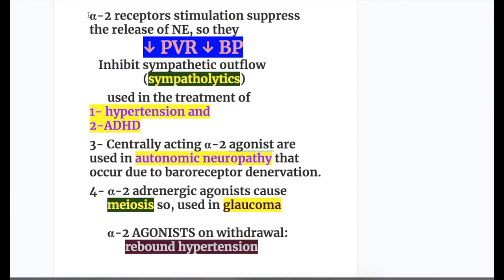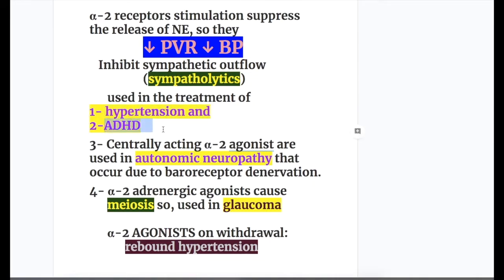Alpha-2 receptor stimulation decreases blood pressure, lipolysis, and insulin secretion. Alpha-2 receptor stimulation suppresses the release of noradrenaline, thereby decreasing peripheral resistance and blood pressure. They are used in the treatment of hypertension and also in ADHD — attention deficit hyperactivity disorder. Centrally acting alpha-2 agonists are also used in autonomic neuropathy due to baroreceptor denervation.